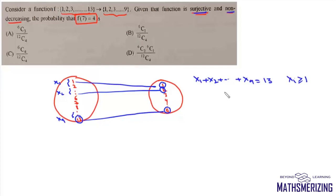So we just need to find the number of positive integral solutions. The number of positive integral solutions is given by n minus 1 choose r minus 1, which is 12 choose 8.